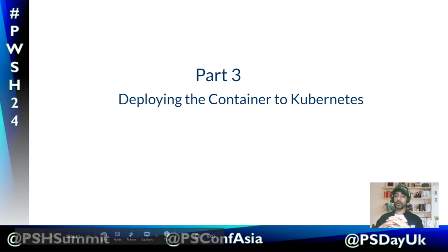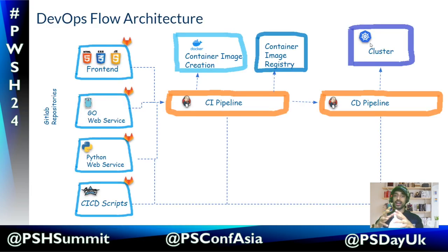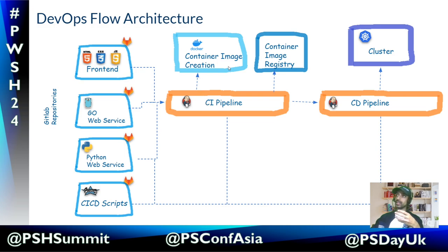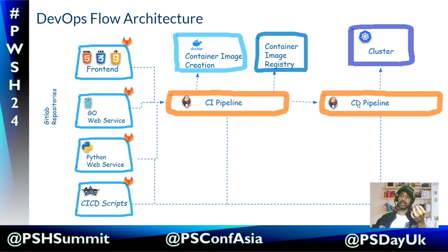Part three: deploying the container into Kubernetes. We have separate repositories for each microservice, and whatever changes we make, a pipeline gets triggered — that's why everything is connected to the CI pipeline. The CI pipeline understands which service triggered it, creates the Docker image from the changes, and pushes it to the Docker Hub registry. Once pushed to Docker Hub, it triggers the CD pipeline, which handles how to deploy it to the Kubernetes cluster.